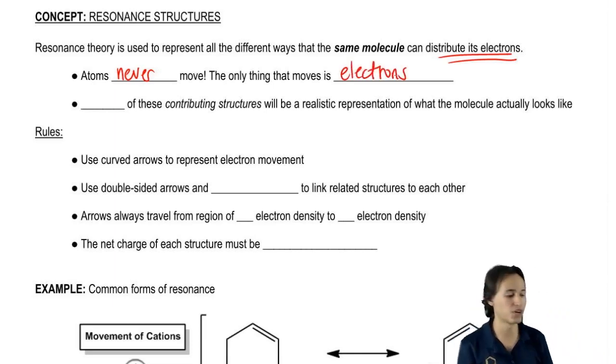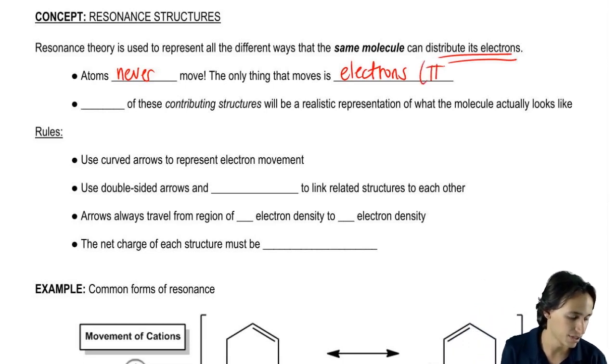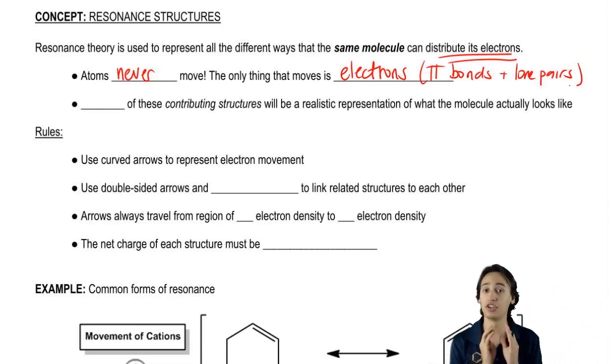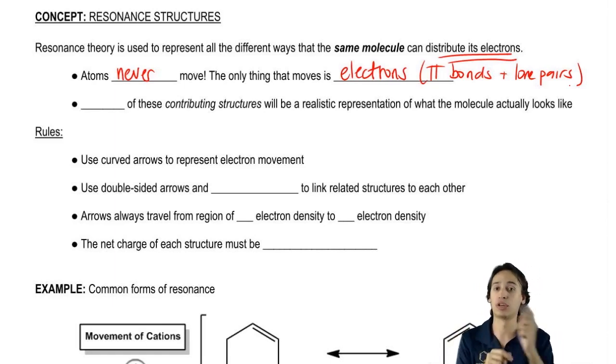When I talk about electrons, what I'm talking about is pi bonds. Pi bonds move and I'm also talking about lone pairs. What that means is that literally I'm not moving any atoms. All I'm moving is double bonds around or triple bonds around and I'm also moving where lone pairs are at. And that has to do with the electrons that are moving throughout the molecule.